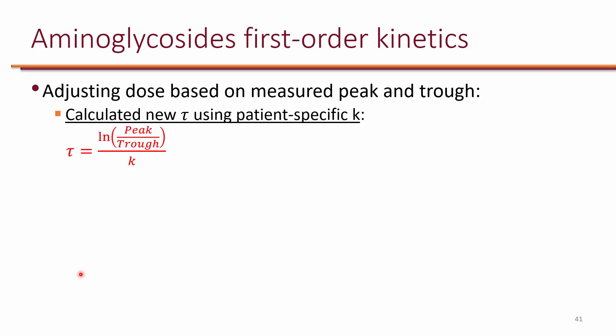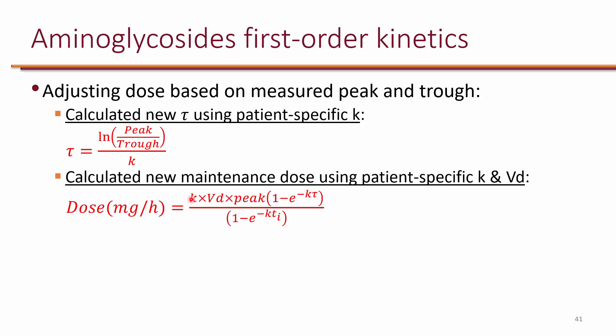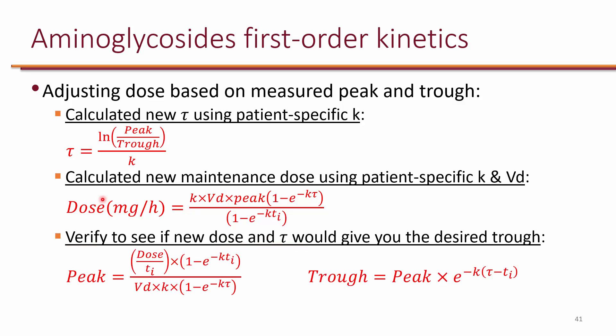And what we do next is to calculate tau again. So now instead of the estimated K, we use the actual K that we calculated in the patient to get the new tau. And then using the new tau and using the individualized K and the individualized volume of distribution, now we come up with a dose that's very accurate in the patient.